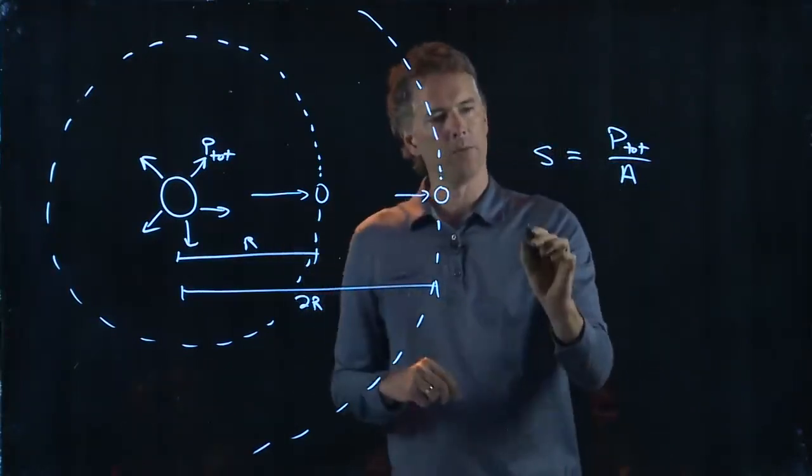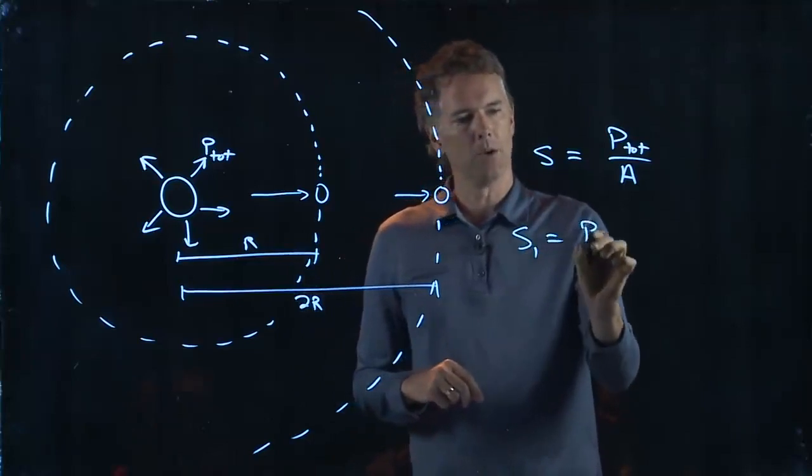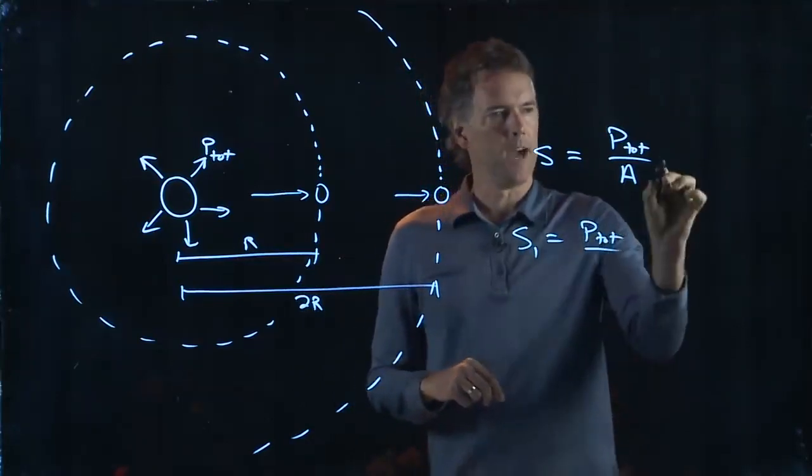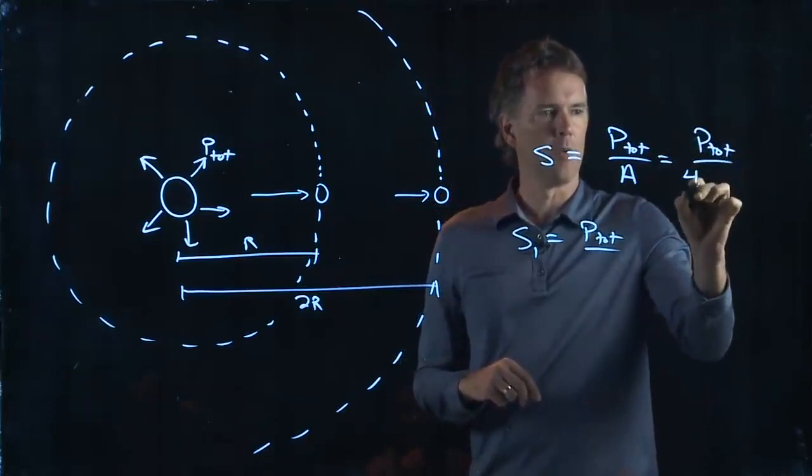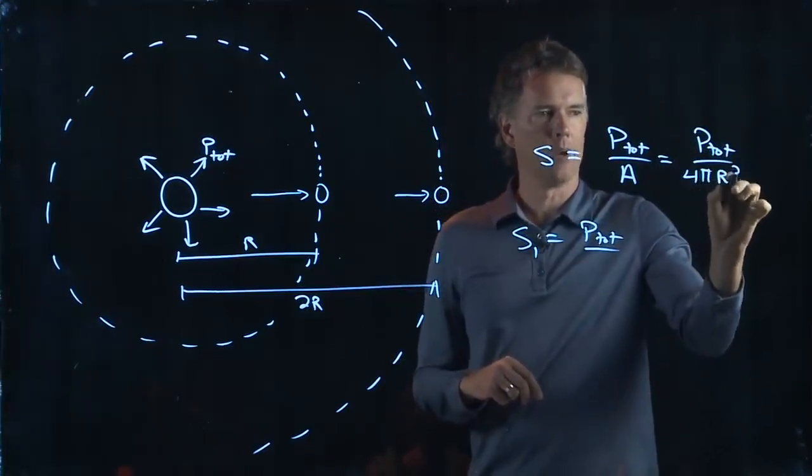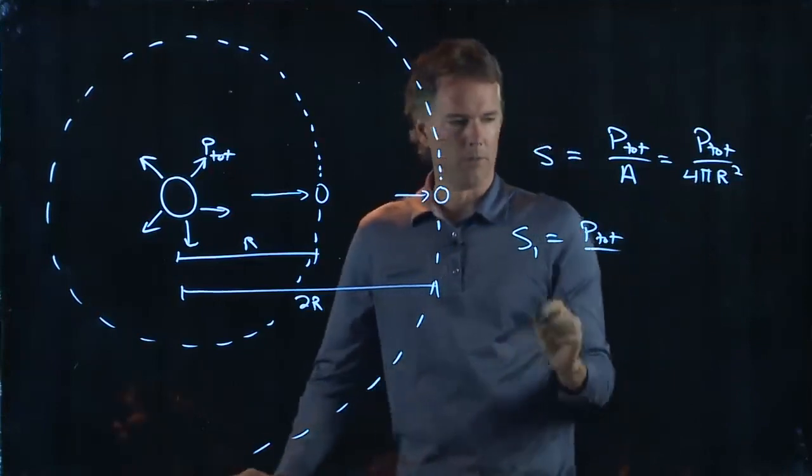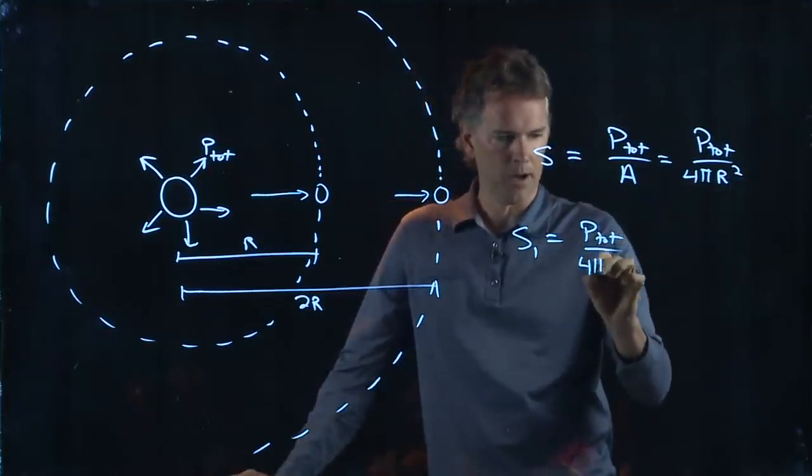So for the first case, we've got P total divided by what is area. Area of a sphere is 4 pi R squared. So in the first case, it's just 4 pi R squared.